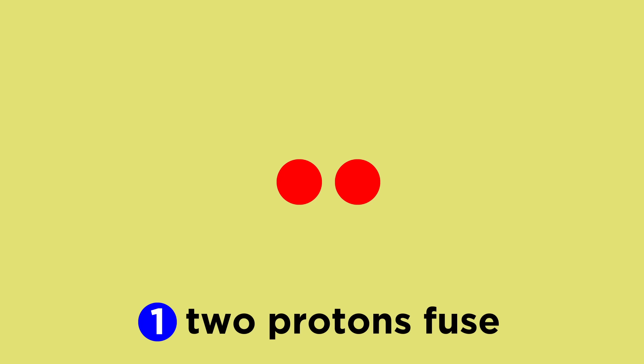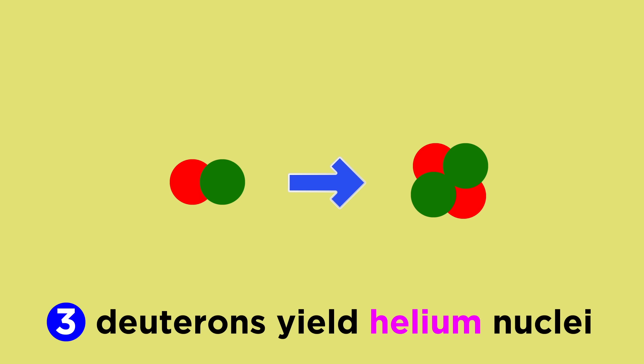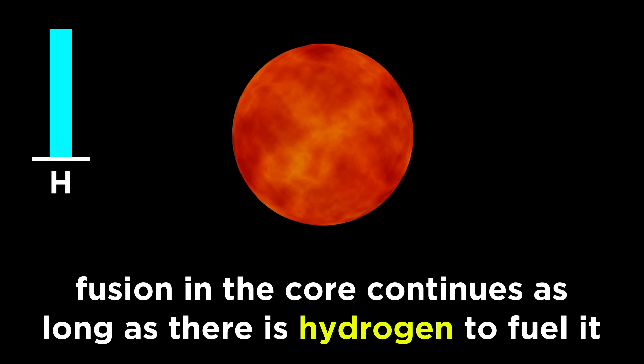These fusion reactions begin with two protons fusing, followed by subsequent beta decay, to get a proton and a neutron, and we call this a deuteron, which is a nucleus of heavy hydrogen. Then deuterons are involved in reactions that make helium, which has two protons and two neutrons. Such a star will continue in this manner for billions of years, slowly fusing all of the hydrogen in its core into helium, and maintaining a relatively steady size, temperature, and luminosity as it does so, until almost all of the hydrogen is gone.